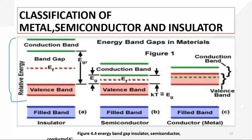The conduction band and the valence band are formed by the valence electrons, because in any bonding or interaction only valence electrons contribute. In silicon, there are also 2s and 2p levels, but those are filled shells. Those filled shells form a filled band but don't contribute to conduction or other properties of the crystal.